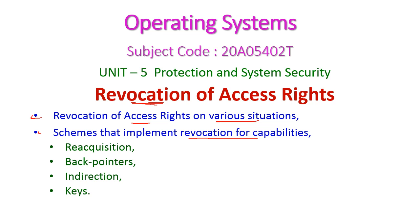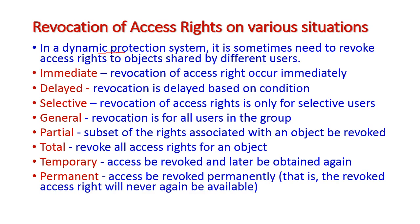Under this we have four different schemes: the first one is reacquisition, the second one is back pointers, the third is indirection, and the last one is keys. In a dynamic protection system, sometimes it is important to rework the access rights to the objects which are shared among different users. Let us see how the revocation of access rights will take place.